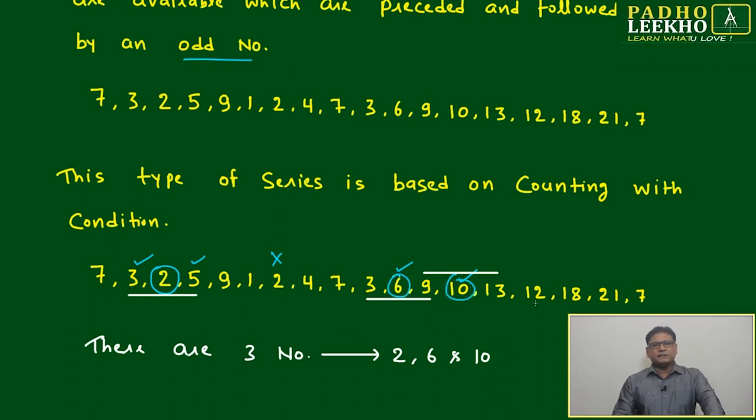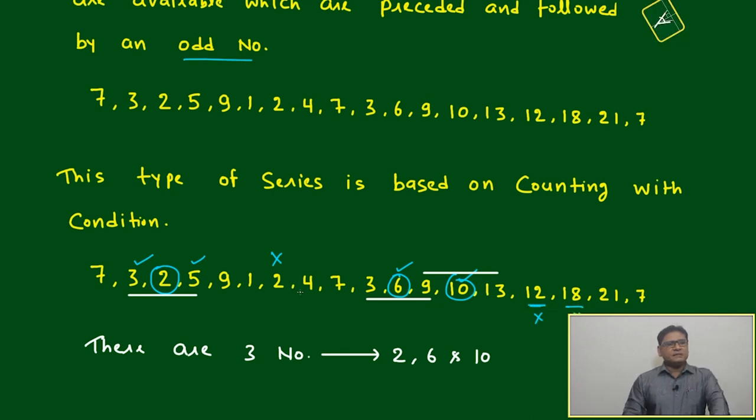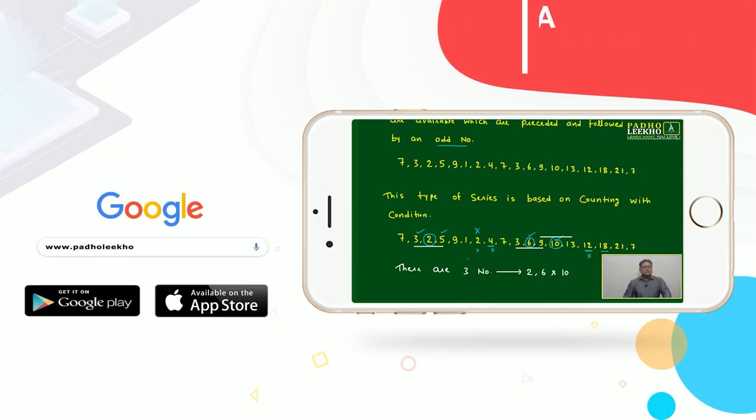Next, this is even number but not followed by odd. This is even number not followed. This is even number not followed. Further even numbers are not there. Remaining all are odd numbers. There are only three even numbers available: two, six, and ten, which are preceded and followed by odd numbers.